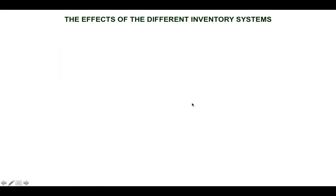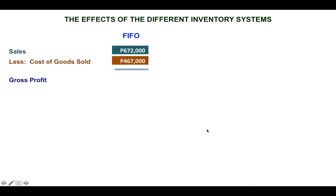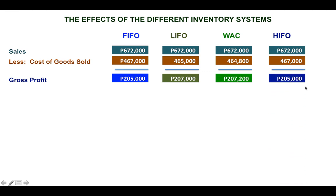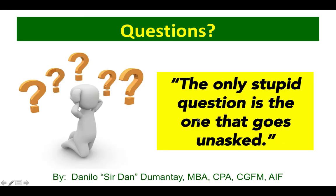Now let us compare the effects of the different inventory costing methods. Under FIFO, we have a gross profit of $205,000; under LIFO, $207,000; under Weighted Average, $207,200; and under HIFO, $205,000. Of course, this does not mean that FIFO always provides the lowest gross profit — it just reflects our specific data and does not support any general conclusion. That concludes our discussion. Let me know if you have questions. Bye for now and have a great day.